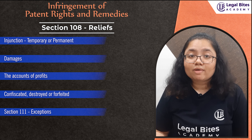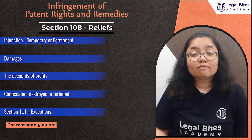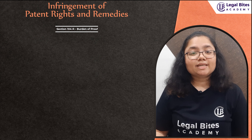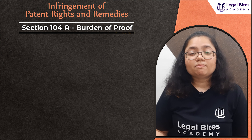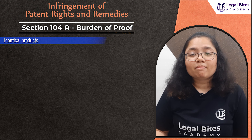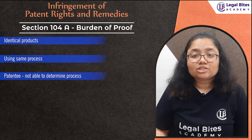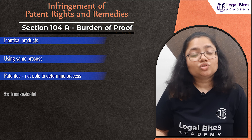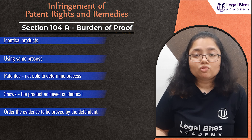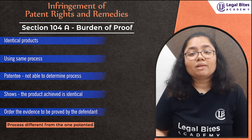Section 111 provides for exceptions against such actions if the defendant proves that he was not reasonably aware that the patent he was apparently infringing was registered. As per Section 104A, in case of a process where a product is obtained, or if there is a possibility that identical products made by another person are by that process, but the patentee is not able to determine if that person used his process — if he shows that the product achieved is identical to his — the court may order the defendant to prove that the process used to obtain those products is different from the one patented.